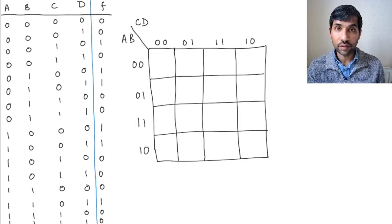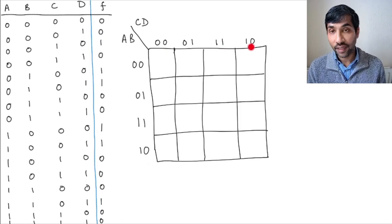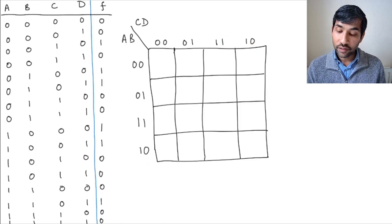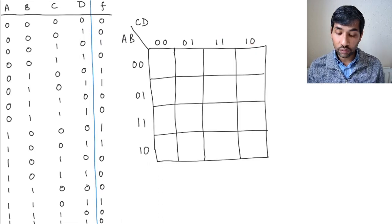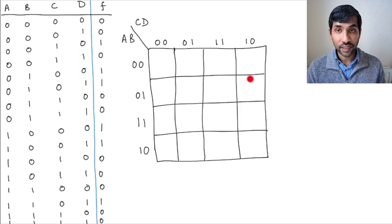Just remember that the order, you write 0, 0, 0, 1, and instead of writing 1, 0 here, you write 1, 1, and then 1, 0. And you'll have to remember this order even while you fill up the outputs from the truth table into the K-maps.